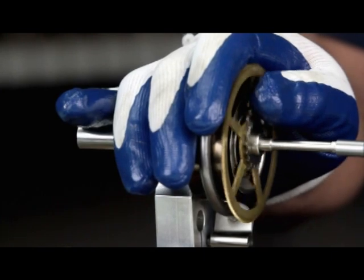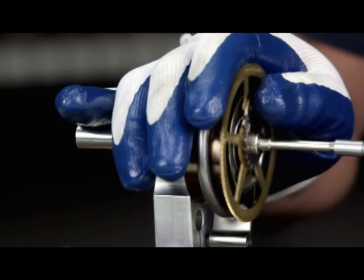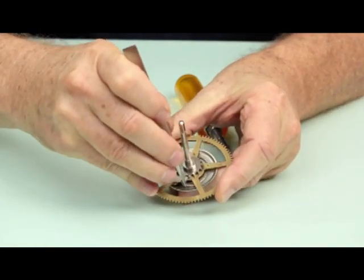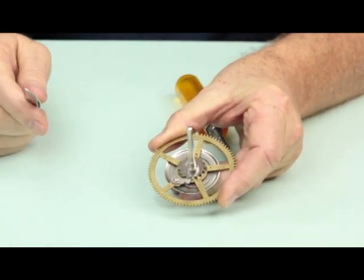Now it's safe to remove the mainspring assembly from the spring winder. Check the click to make sure it is engaging the ratchet wheel, and then move the click spring back onto the click.